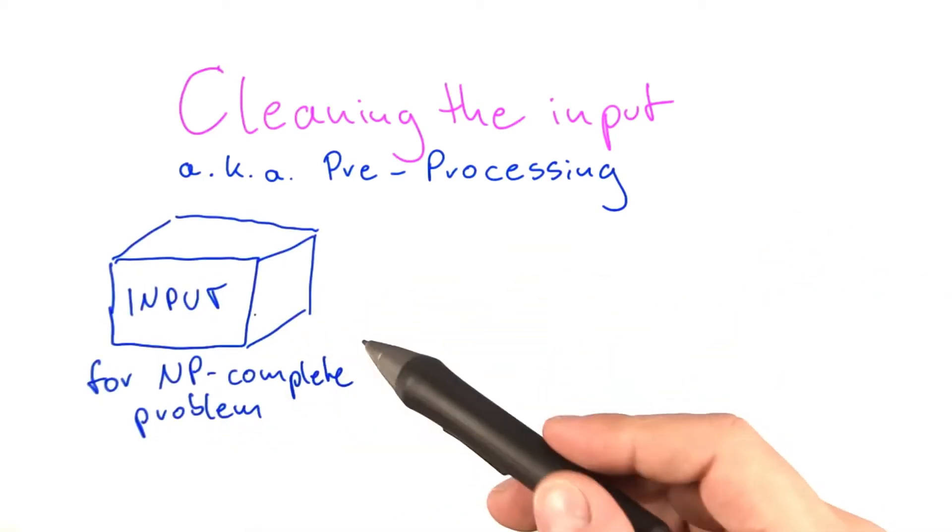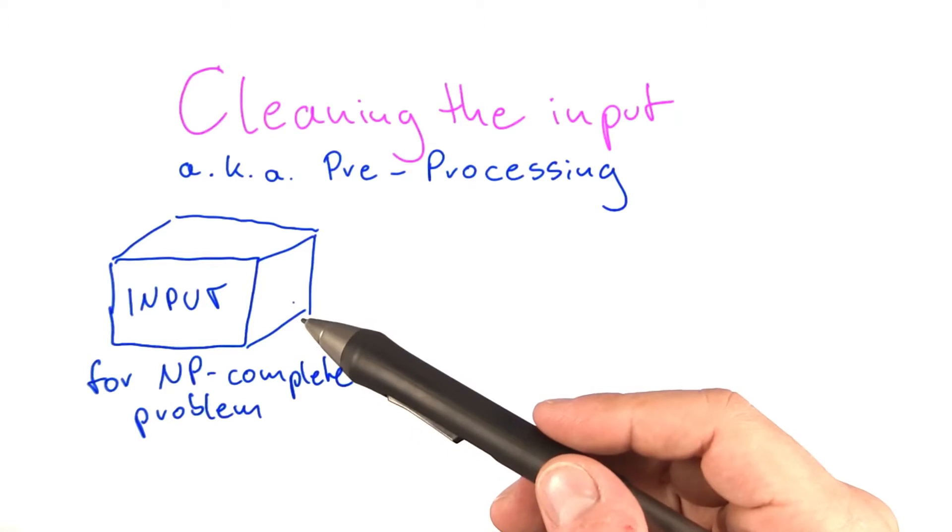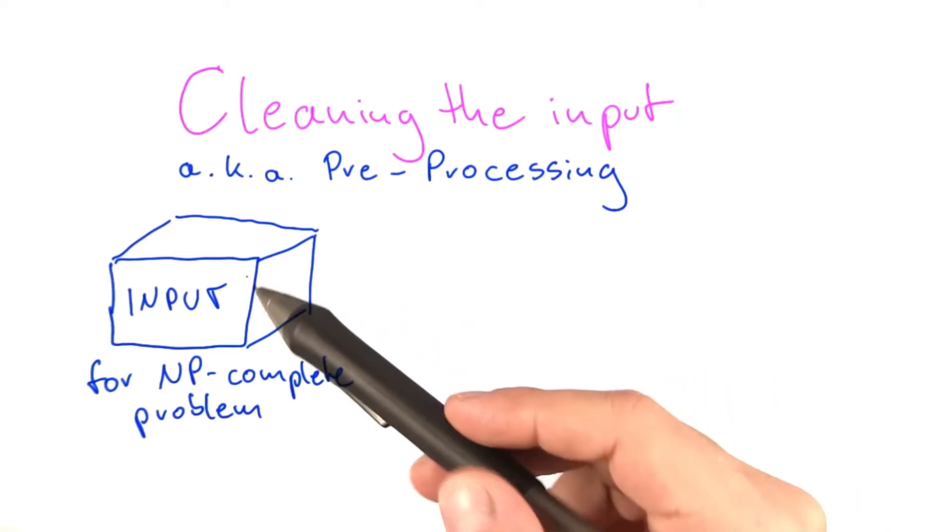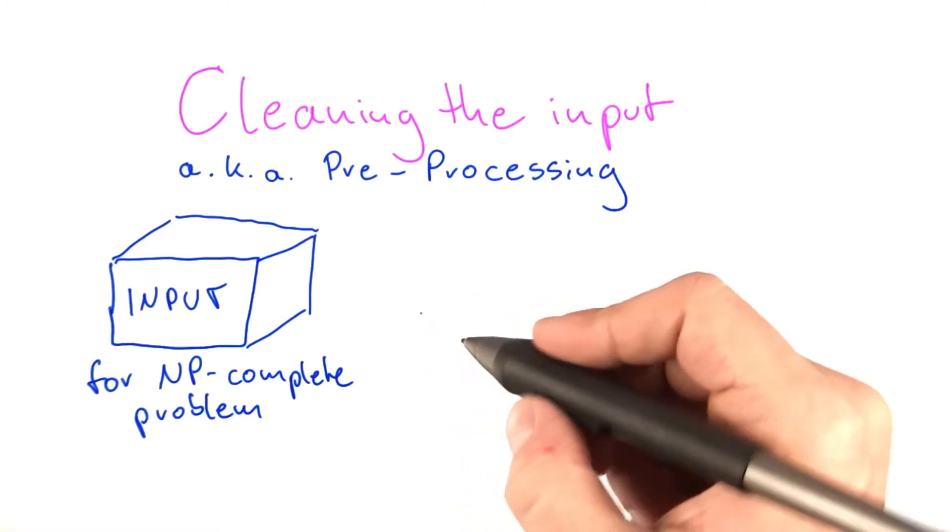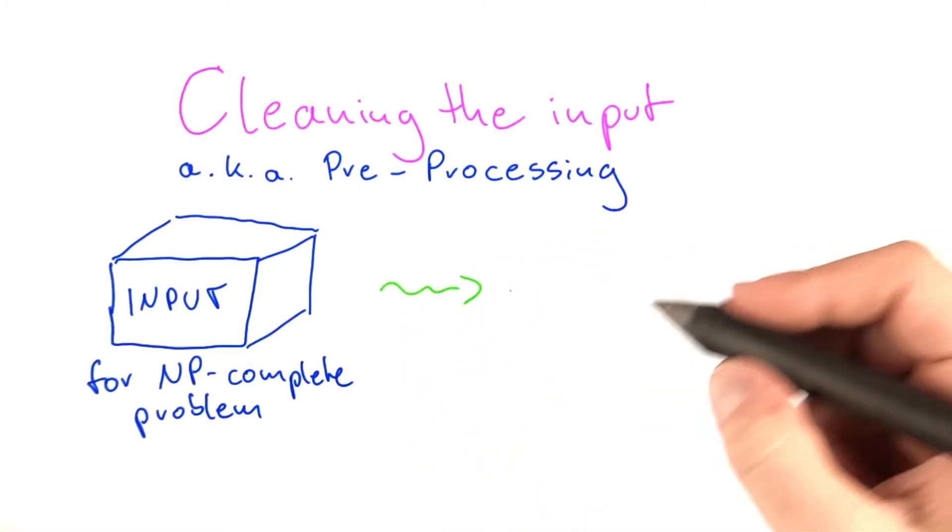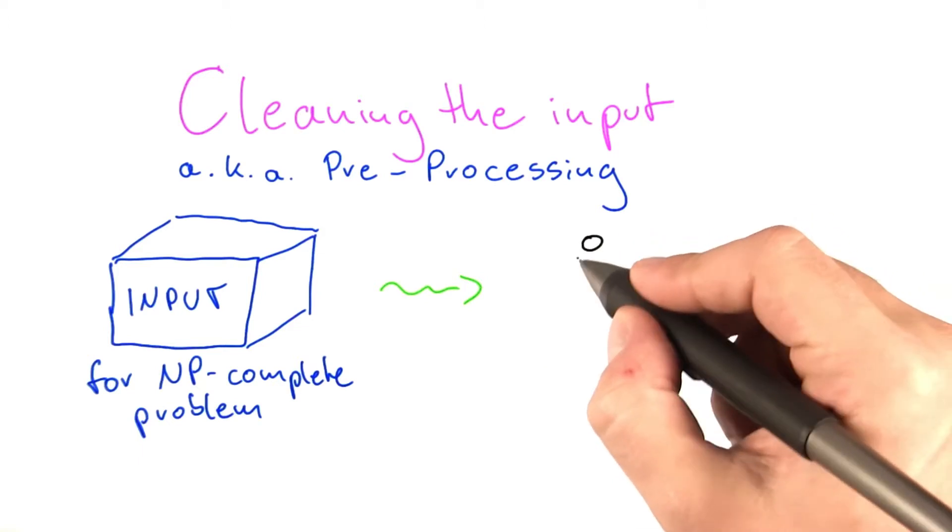Here's what you would normally do for an NP-complete problem, as we have talked about so far. So if you're given the input for an NP-complete problem, what you would do using the techniques from the previous units is you would fire up your search tree to try and find an optimal solution.